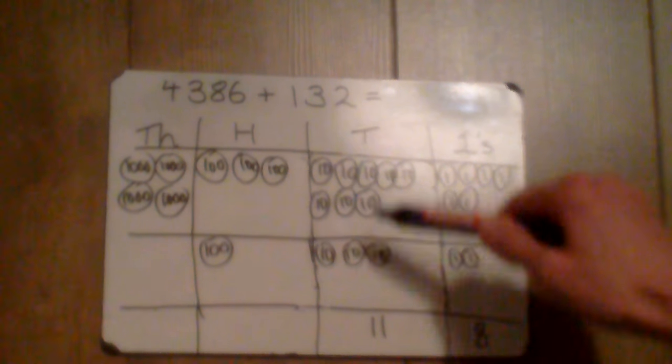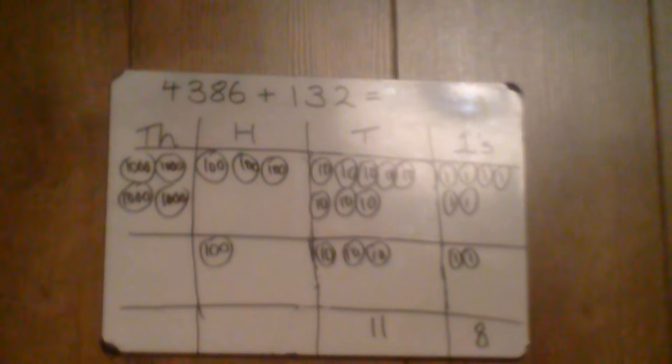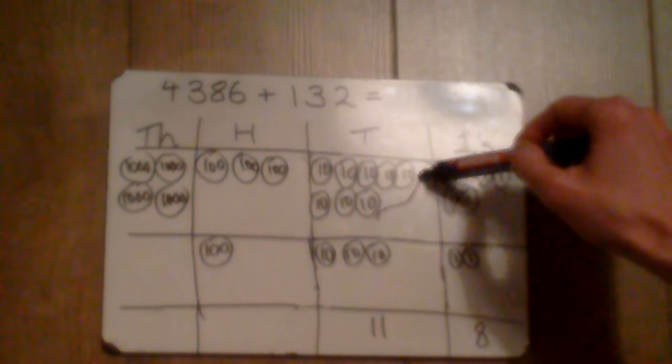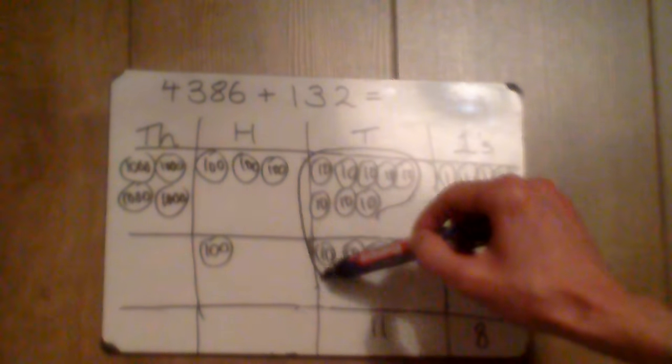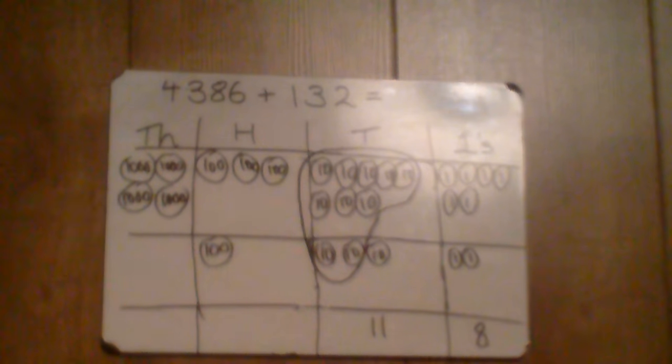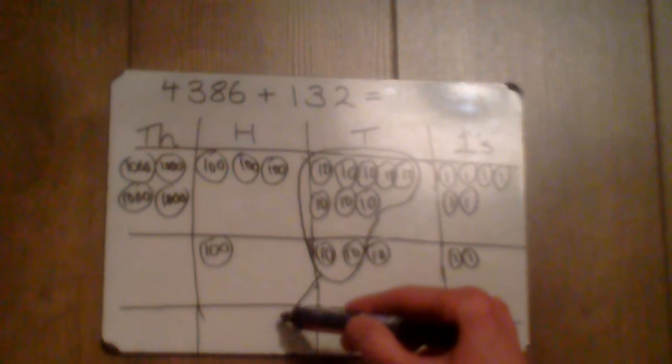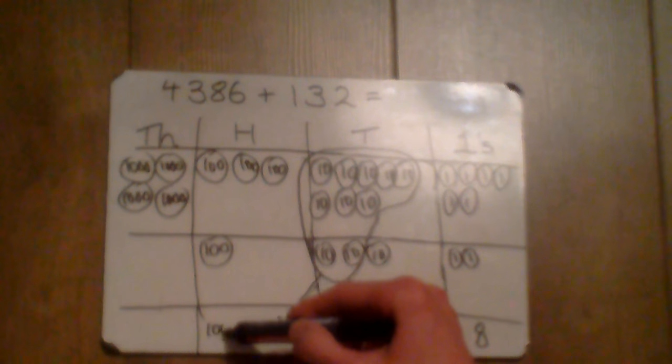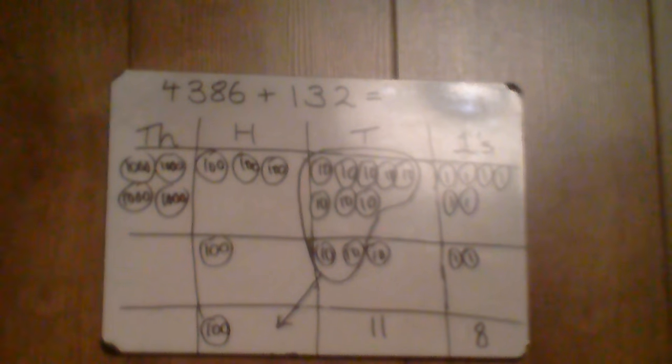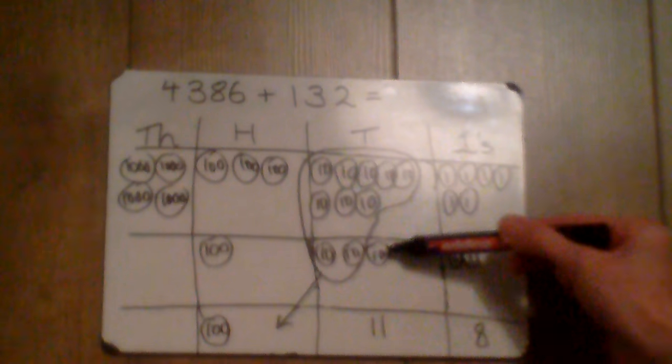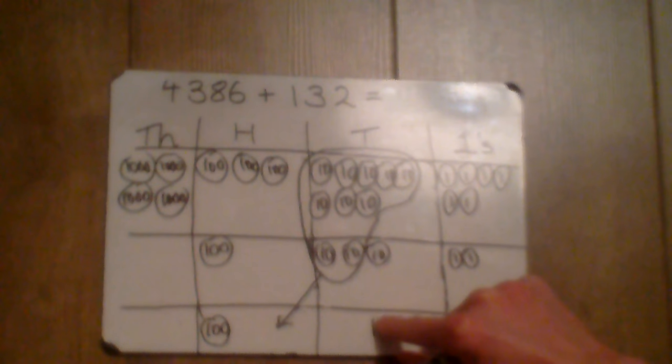Now I know that in each of these columns I can't have 11. Therefore I'm going to need to regroup 10 of these tens by putting a circle around them. I'm going to need to regroup them into a hundred. And because it's a hundred it needs to go into my hundreds column. In my tens column I'm now left with 1 ten. So this 11 now becomes 1 ten.